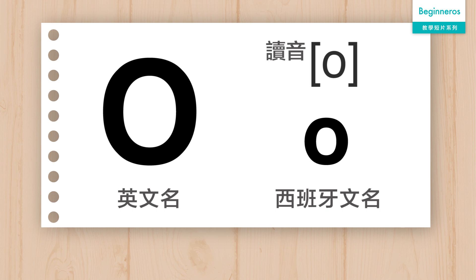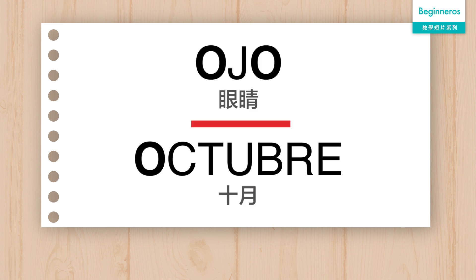O 的西班牙文就是 O，它的發音有一些像中文的 O 這個聲音，而它也是西班牙文裡面的其中一個響音，所以它在任何情況之下都只有一個發音。例如 Ojo, Octubre。